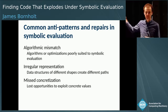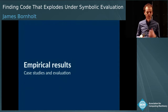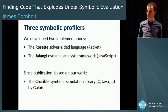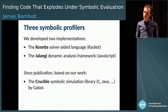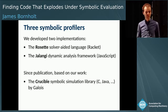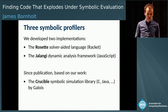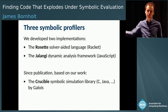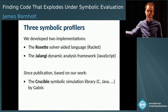Now for the case studies showing that symbolic profiling is effective in practice. We didn't implement symbolic profiling just once — there are three different implementations. The first is in Rosette, based in Racket, which we've been seeing throughout the talk. We also developed a second implementation for Jalangi, a dynamic analysis framework for JavaScript. And since publication, colleagues at Galois have implemented the same idea in their Crucible tool — they were able to reuse most of our code, just needing to generate their own symbolic evaluation graph and symbolic heap and pass it to our analysis.